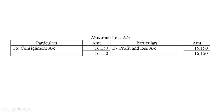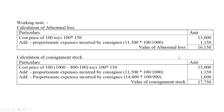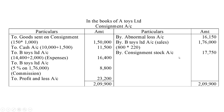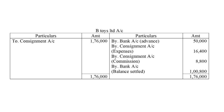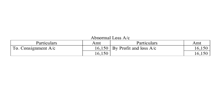The last account is the abnormal loss account. From the consignment account, Rs. 16,150 is transferred to profit and loss account by crediting profit and loss account Rs. 16,150. So that is how we prepare the consignment account, B Toys Limited account, and abnormal loss account. Thank you for watching this video.